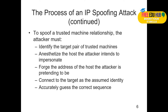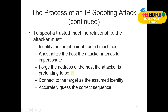To spoof a trusted machine relationship, the attacker must first identify the target pair of trusted machines — the two machines communicating via the Routing Information Protocol. Then anesthetize the host the attacker intends to impersonate, telling the host that the original computer does not exist and redirecting traffic. Then forge the address of that host, presenting as the sender. Finally, connect the target to the assumed identity and accurately determine the correct sequence number.